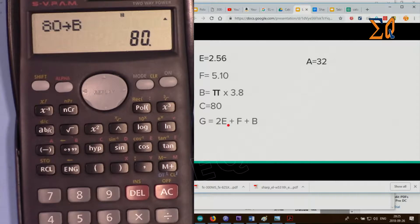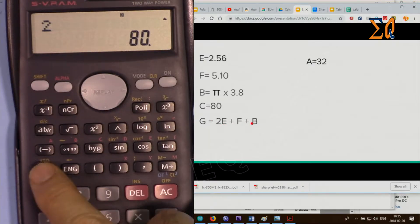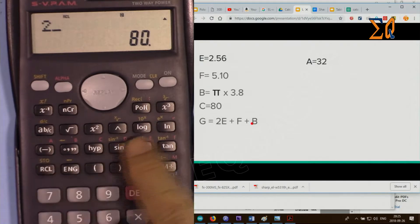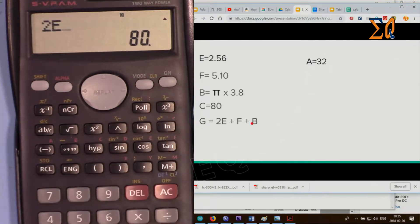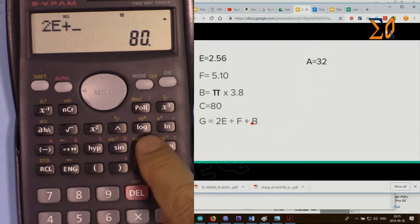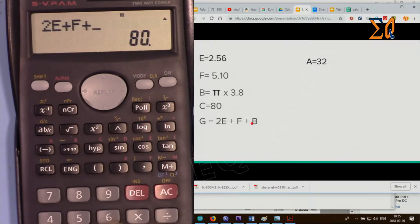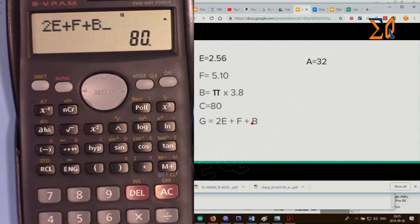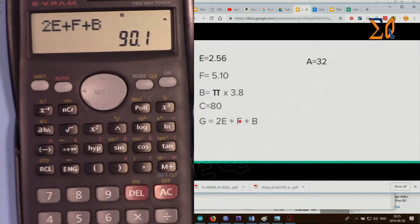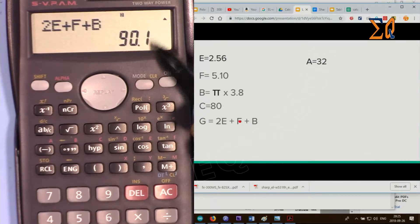So 80, second function shift store B. Now that value is in B. Let's say you want to do some calculation, we'll call it G. There is no G, but it's arbitrary. Let's say you want to do 2E plus F plus B. So 2 recall E plus recall F plus recall B, exactly the way that you see it. Press equal sign and the result is displayed.